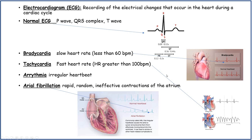Bradycardia is a slow heart rate of less than 60 beats per minute, so you would see fewer PQRST wave complexes per minute. Tachycardia is a fast heart rate — greater than 100 beats per minute — and you would see many more PQRST waves per minute.